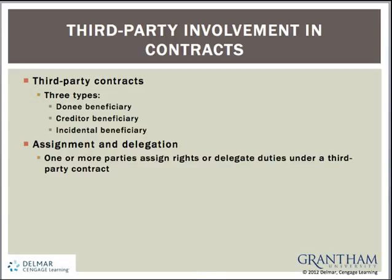To conclude our discussion of contracts, we will end with assignment and delegation. Assignment and delegation takes place when one or more parties to a contract assign rights or delegate duties under the contract to a third party. Generally, assignment or delegation is acceptable unless the parties have stipulated in the contract that it is not permissible, or the assignment or delegation would significantly alter the duty or rights of the other party to the contract.